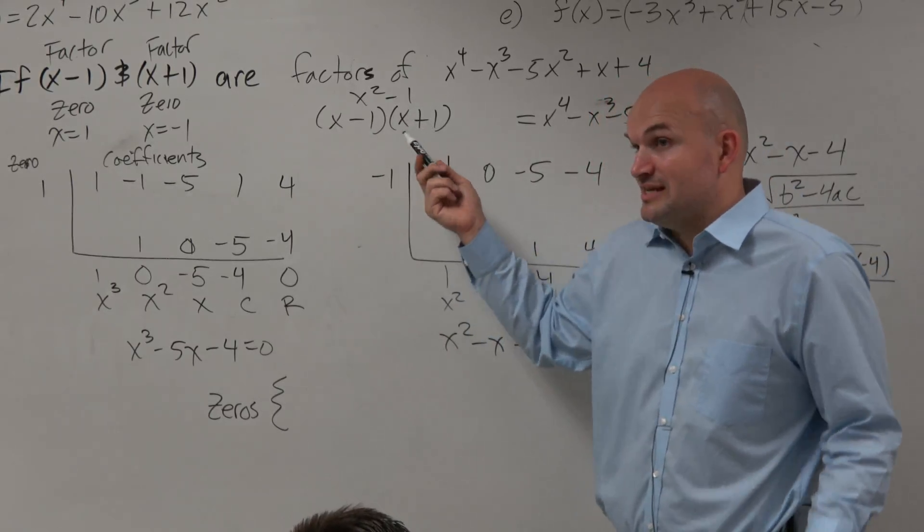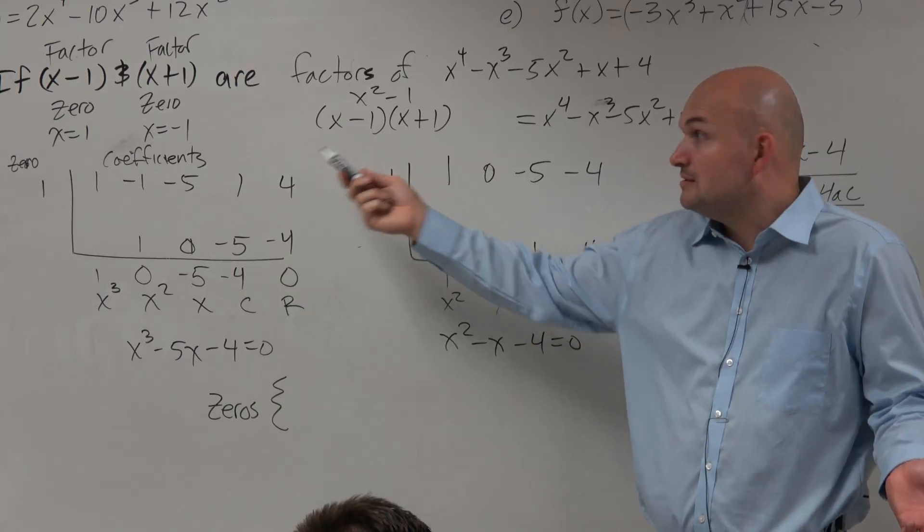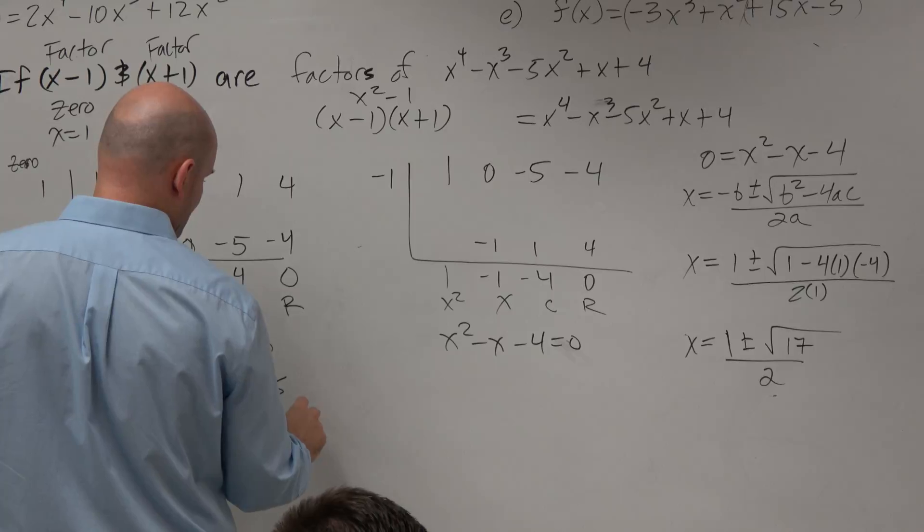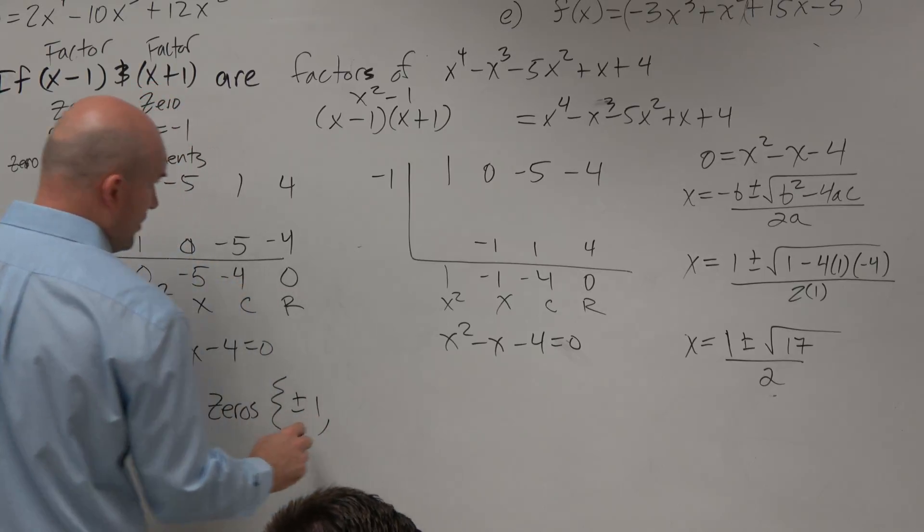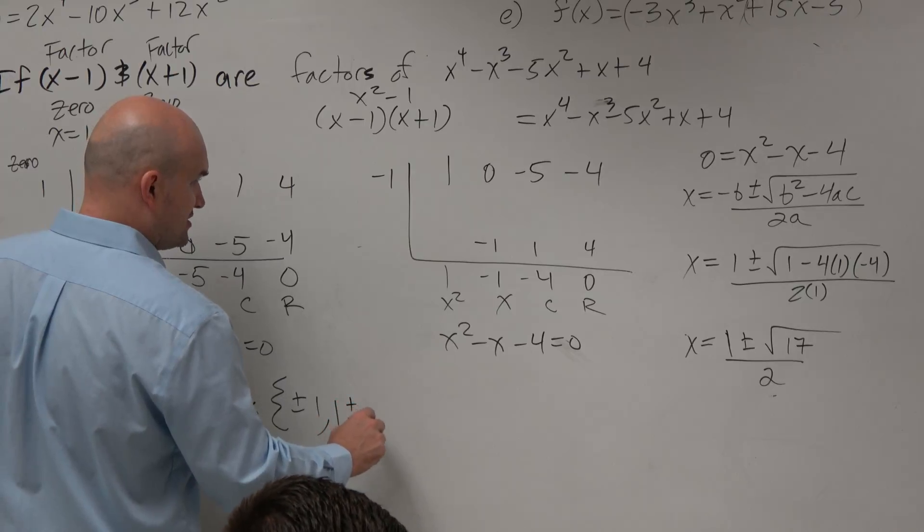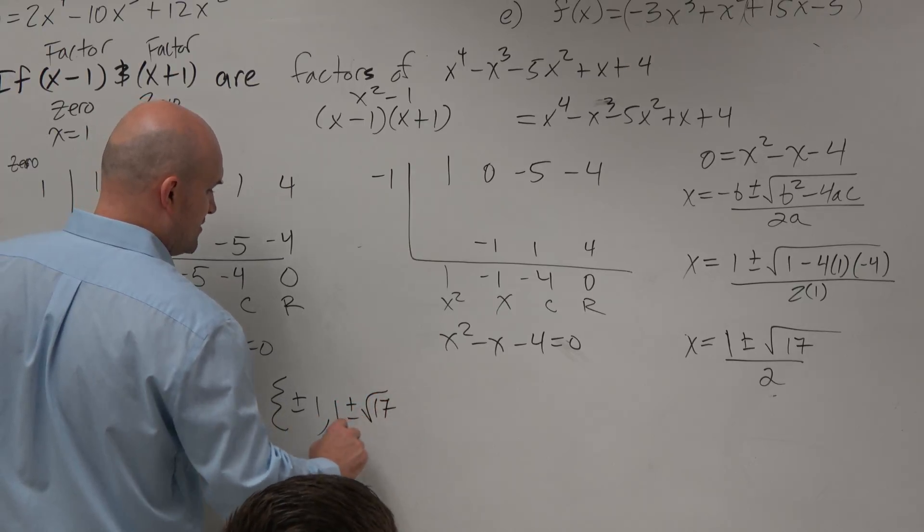If we were given two factors, can't we say we know two 0's? Right? We're given two factors. Now we know our two 0's. So we could say our 0's are going to be plus or minus 1. And then my other one is this, 1 plus or minus square root of 17 over 2.